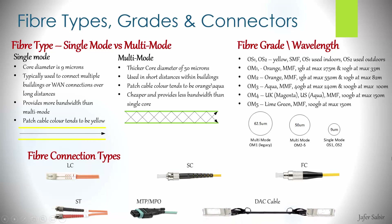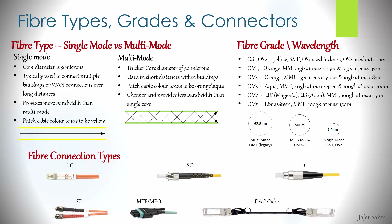Finally, there is something known as a DAC cable, which stands for direct attach cable. It's basically the SFP module built into the fiber cable itself, so you get the SFP module, the connector, and the cable as one piece of kit. It's good for connecting things in the same rack at short distances — for example, plugging one switch to another switch in the same rack without having to buy the cable and separate connectors. It's an all-in-one product.